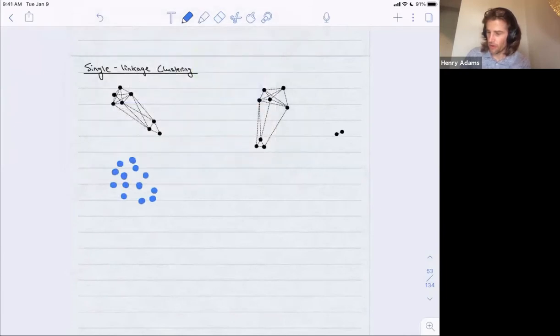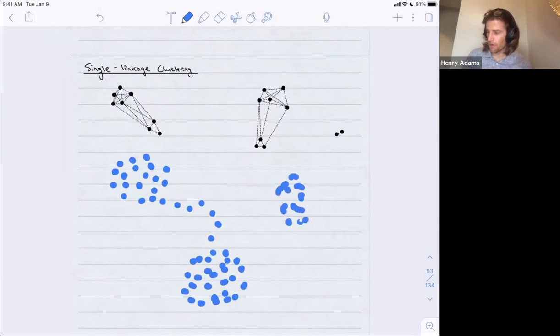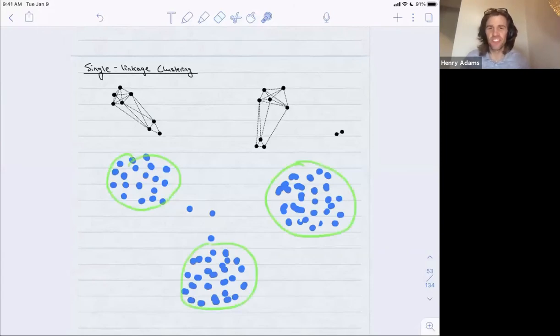Here's my data set. Let me edit it a little bit. All right, so how many clusters do you see here? I think most people would probably say that they see three large clusters in blue,